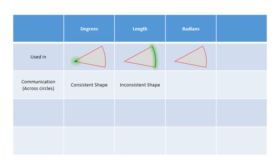Radians multitask and can cover both the opening of the angle and the length of the circumference. They are also consistent across all sizes of circles.